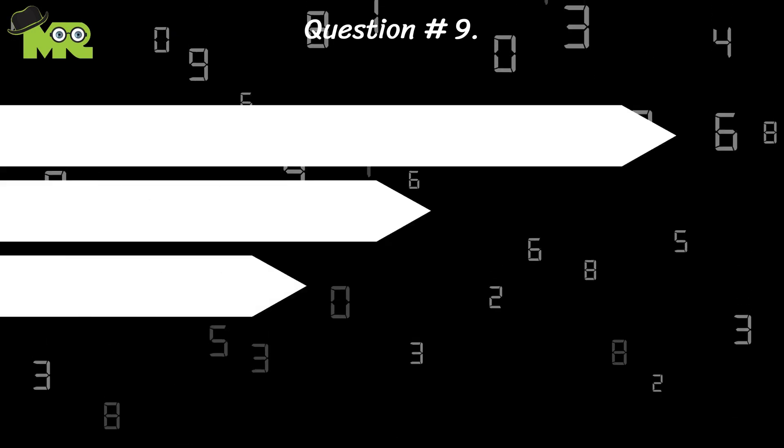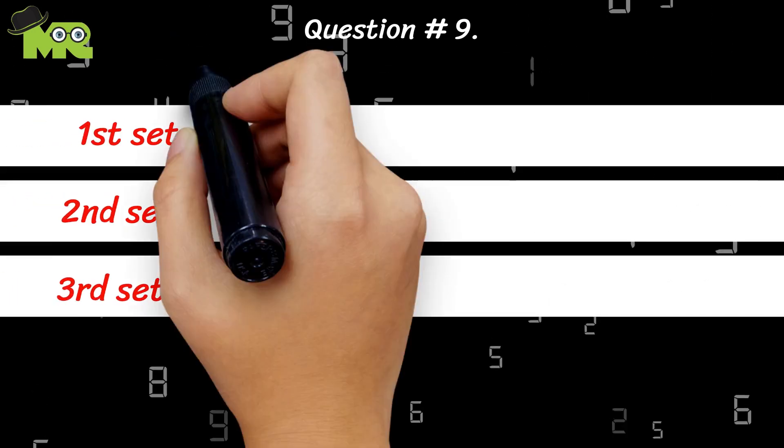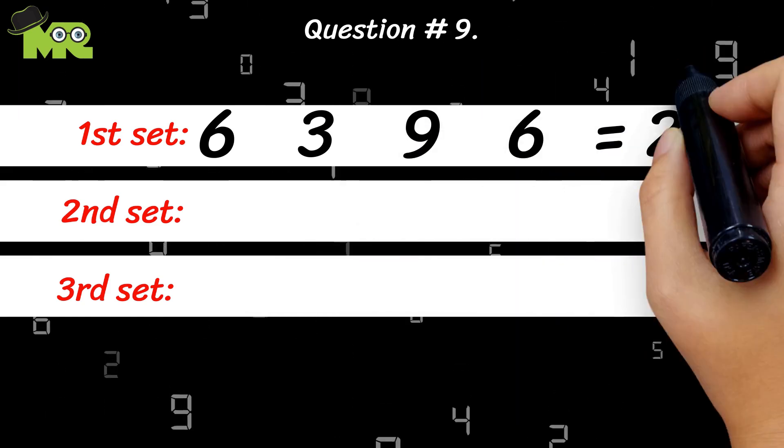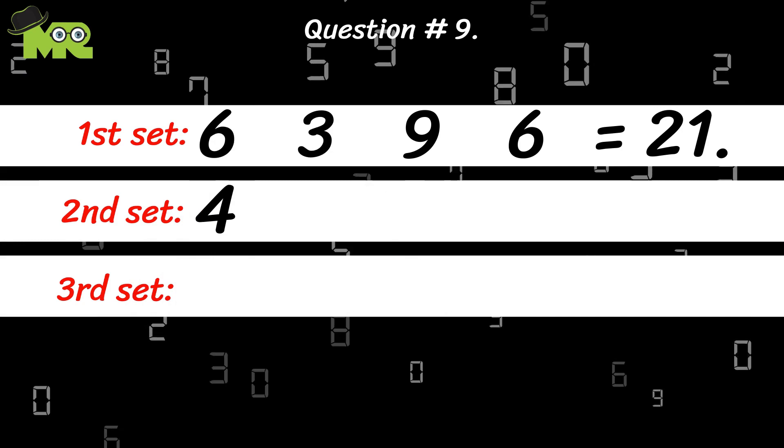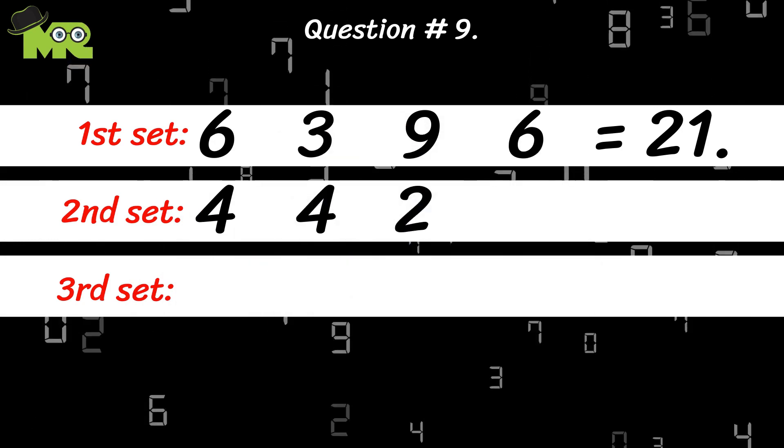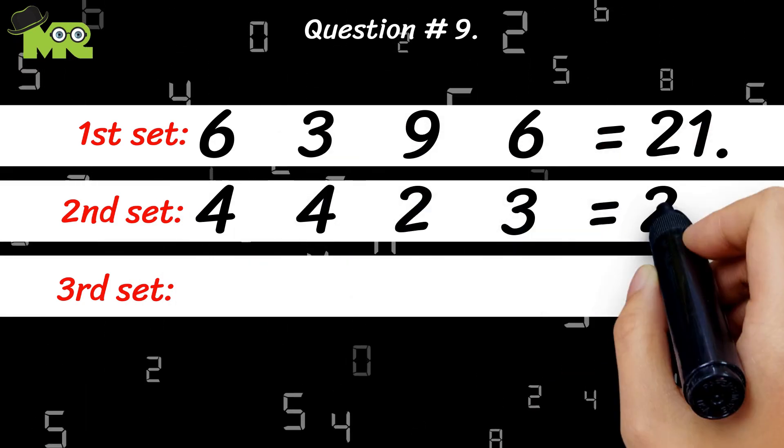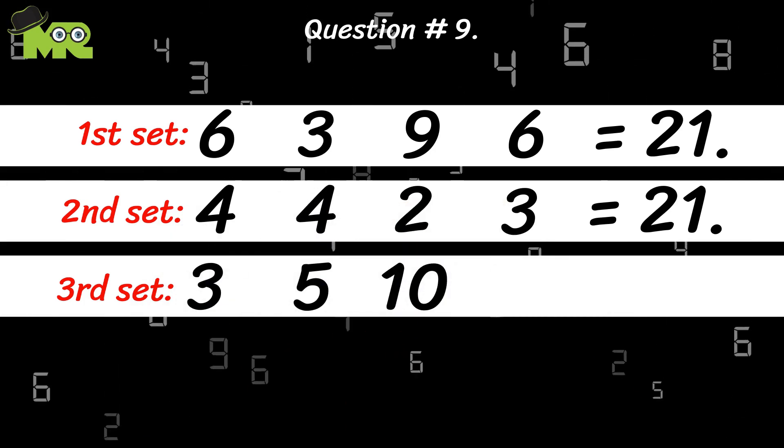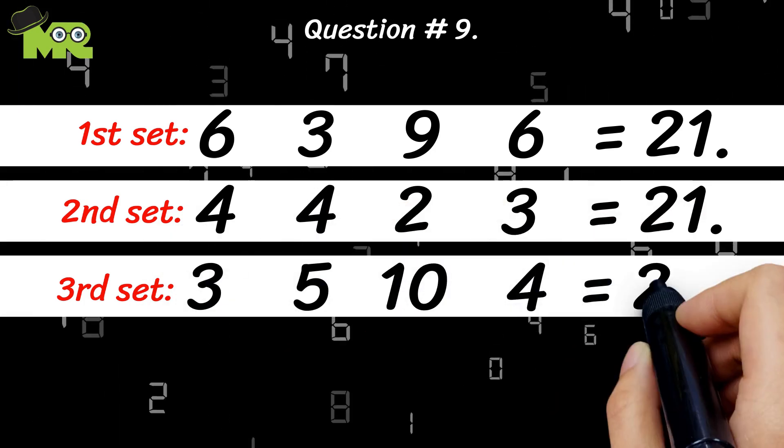We're giving you three different sets of numbers. Six, three, nine, six should be equal to 21. Four, four, two, three should be equal to 21. Three, five, ten, four should be equal to 21.